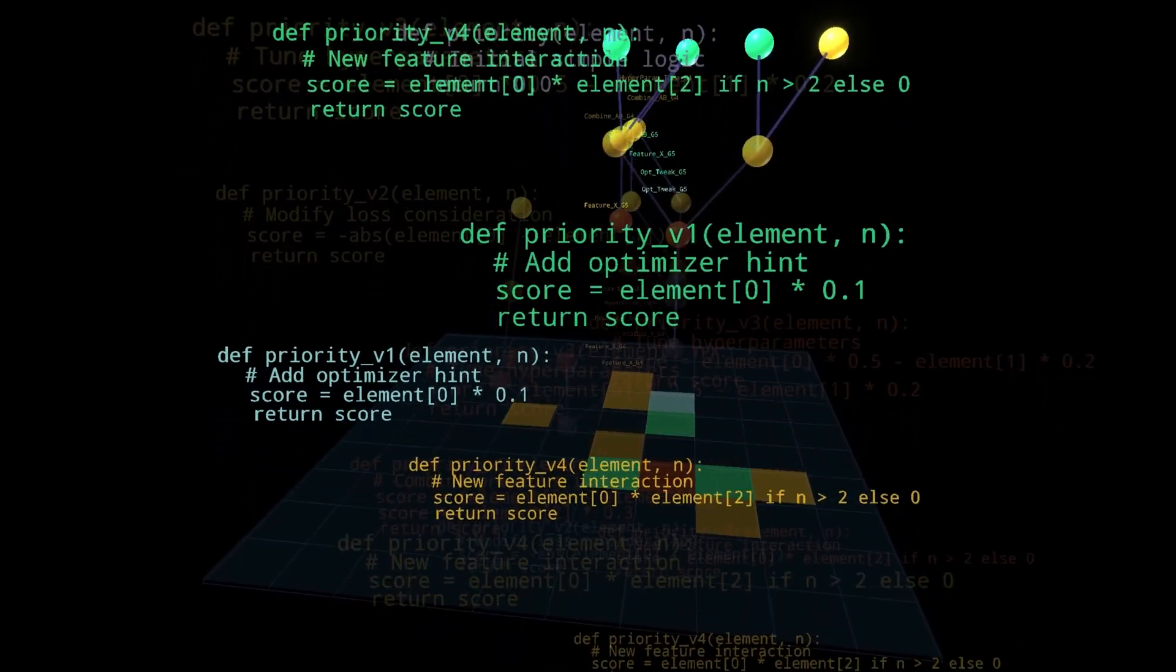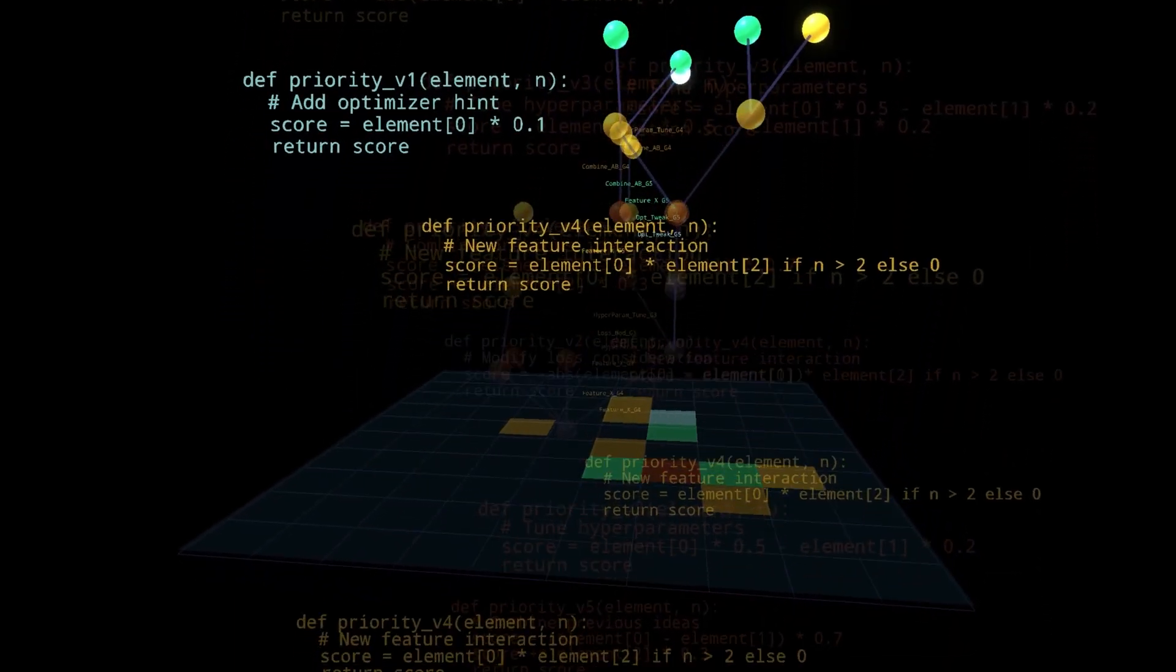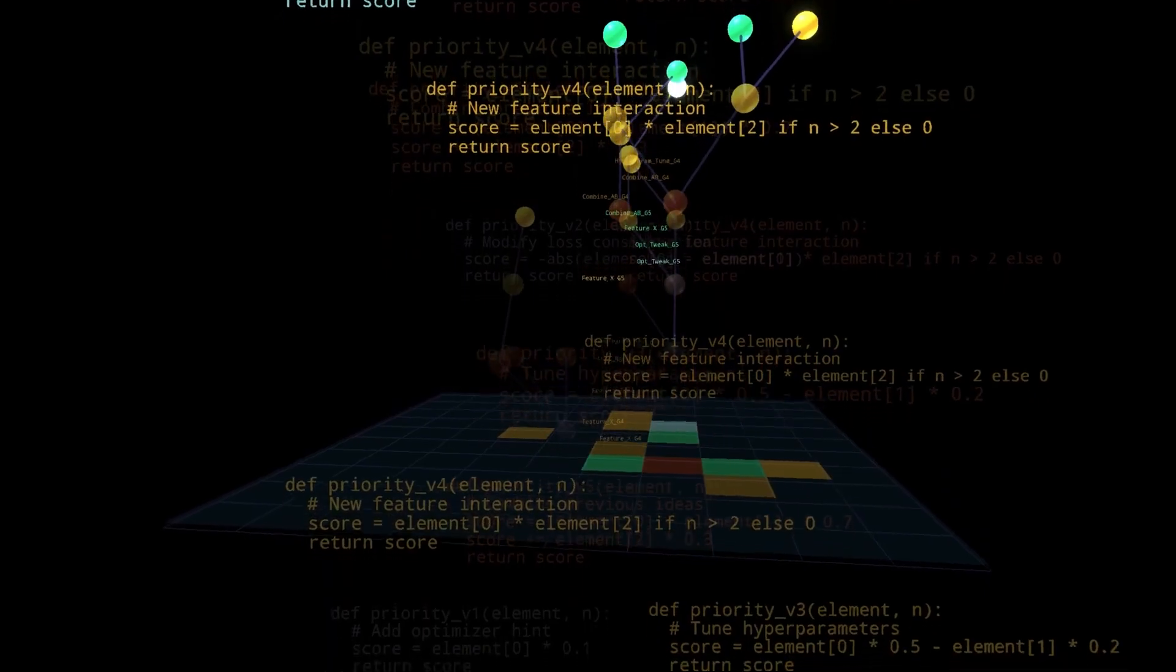A lot of researchers would probably assume using complex numbers would make the problem more difficult. But AlphaEvolve somehow realized that's a good approach.